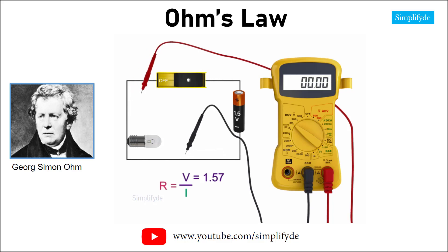Now, let's determine the resistance of the bulb in the circuit using the ohms equations. If the current in the circuit is 0.3 amps and the voltage across the battery is 1.57, then the resistance of the light bulb would be 1.57 divided by 0.3 or 5.23 ohms.